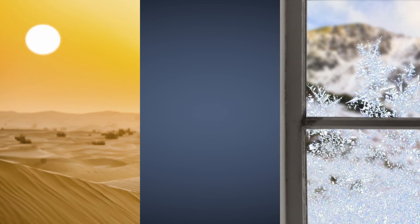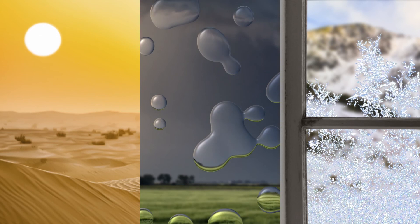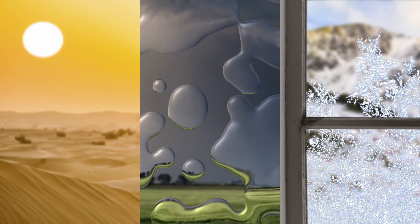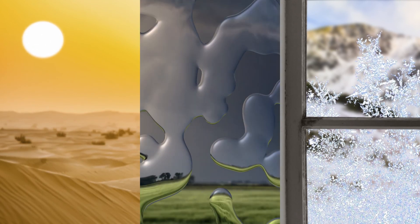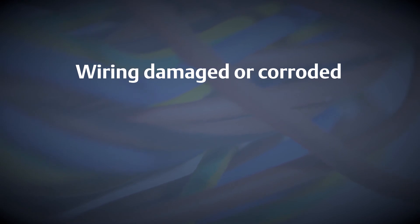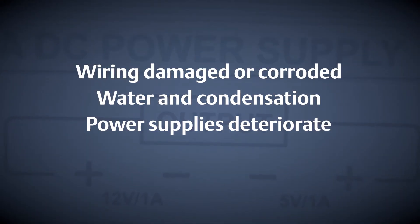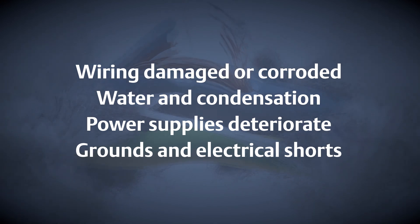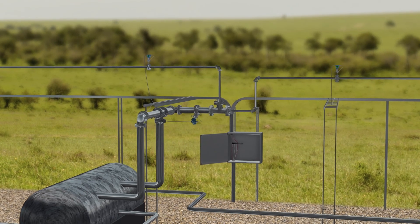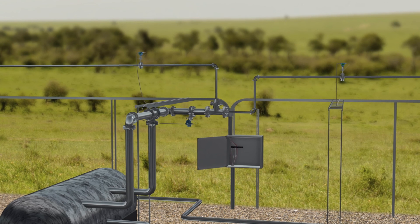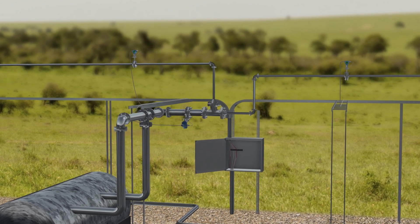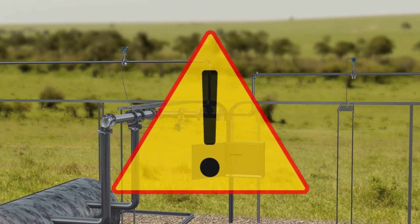Over the life of your plant, these critical components of your loop infrastructure are subjected to a variety of environmental and human stresses that can put the reliability of your 4 to 20 milliamp control loop at risk. Wires can become damaged or corroded. Water and condensation can find its way into housings and conduit. Power supplies can deteriorate and become unstable. Grounds and electrical shorts can inadvertently be introduced to the loop, causing the control room to receive inaccurate measurements and potentially lead to dangerous on-scale failures.